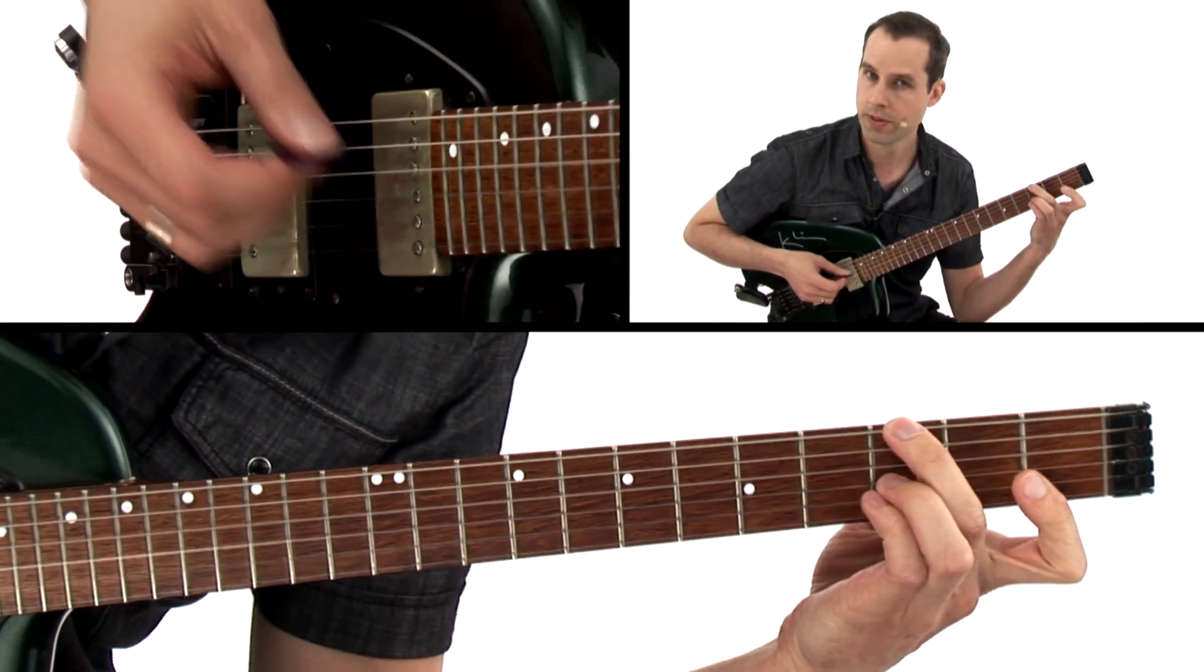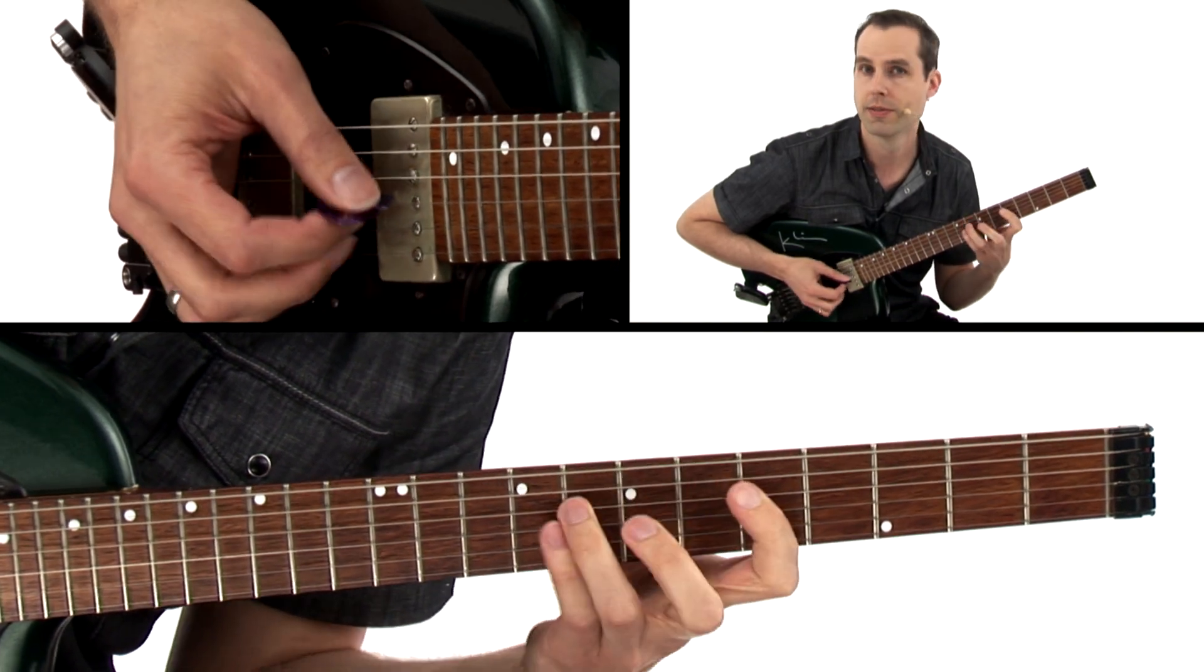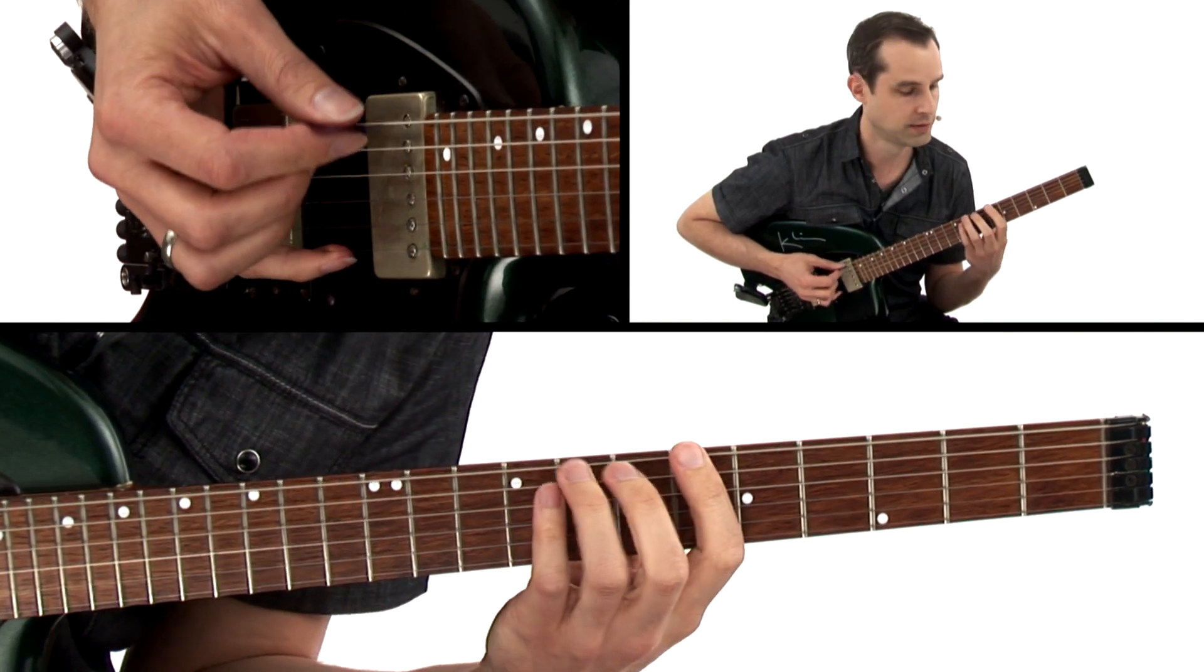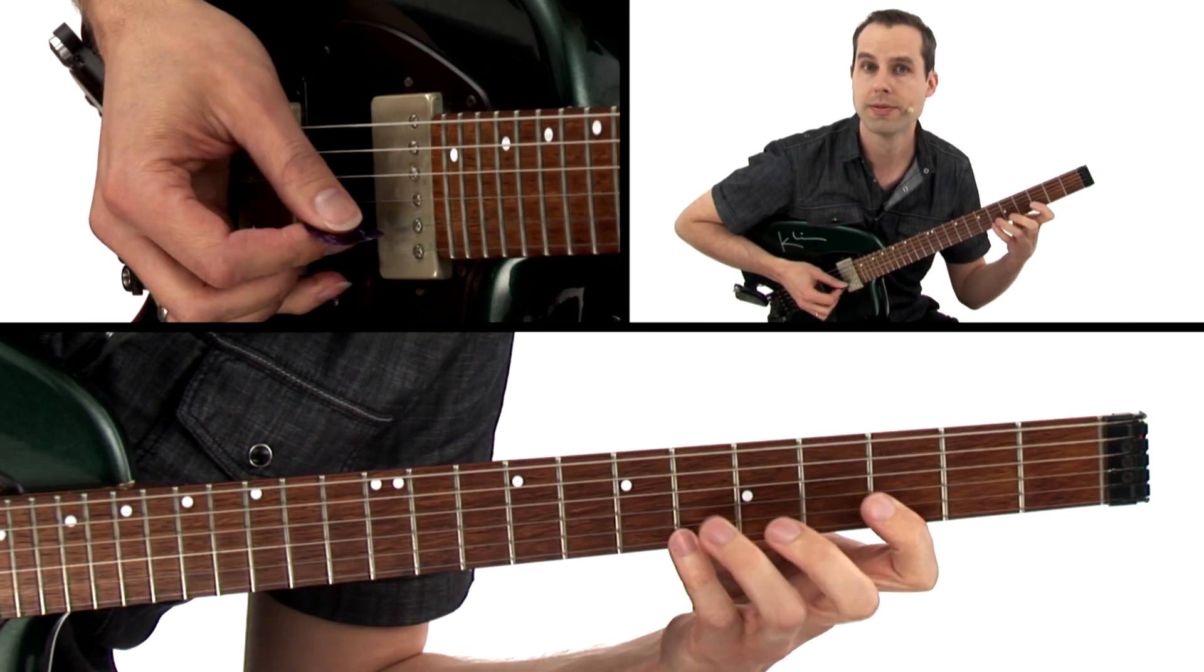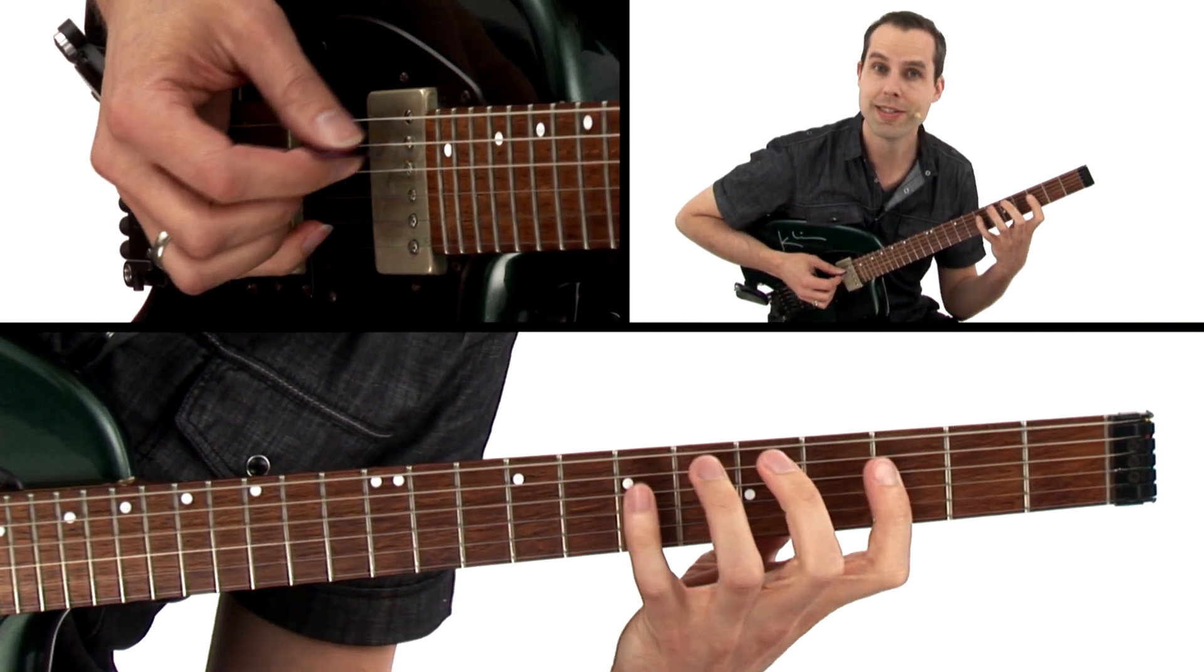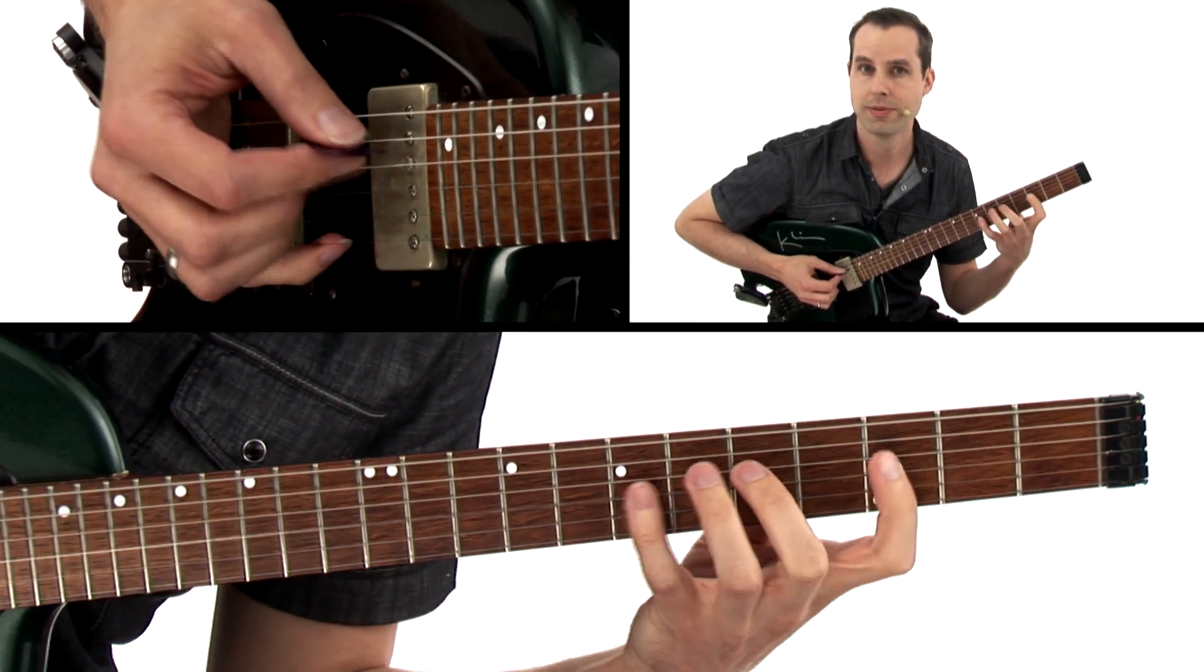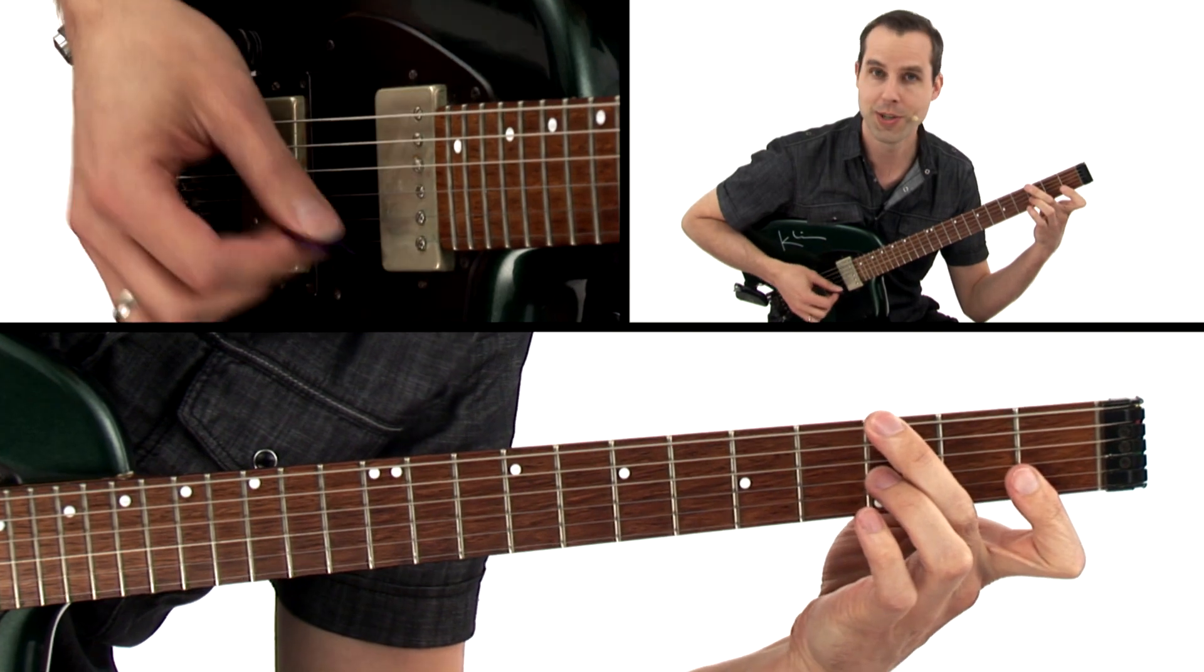Now we move on to G-minor. I can use G-minor pentatonic. Any of those. I can use G-dorian-sounding arpeggios. Any of those choices that we have.